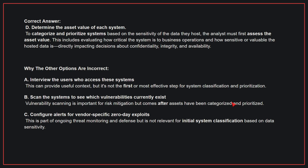Why the other options are incorrect? A: interview the users who access these systems — this can provide useful context but is not the first or most effective step for system classification. B: scan the systems to see which vulnerabilities currently exist — vulnerability scanning is important for risk mitigation but comes after assets have been categorized and prioritized. C: configure alerts for vendor-specific zero-day exploits — this is part of ongoing threat monitoring, not relevant for initial system classification based on data sensitivity. Therefore, the correct answer is D.